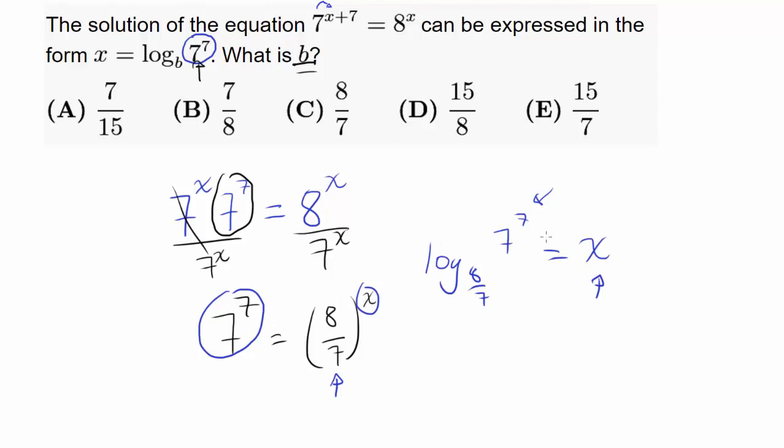By converting to logarithms from this exponential form, you obtain this expression. We have x equals log base b of 7 to the 7th, and our b is 8 over 7. So our answer is C.